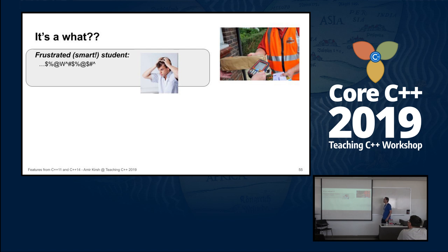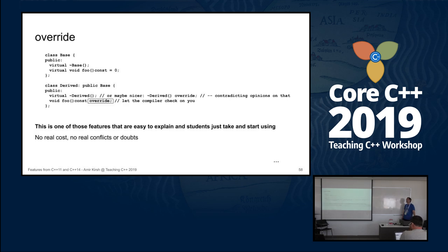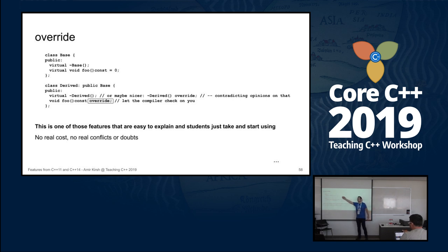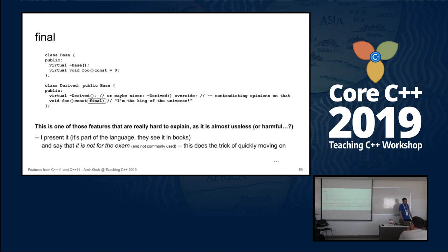What else do we have in C++11? We have `override`. All students understand `override` with a simple example: putting `override` on a virtual method inherited from a base class asks the compiler to check on you. They like it because they usually come asking me to check their program — and I ask them, did you ask the compiler to check first? So they like having the compiler check for them. Then I may touch on `final`, but that won't be on the exam.